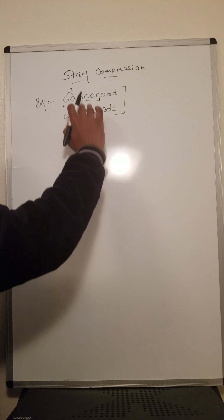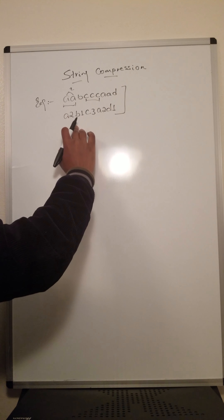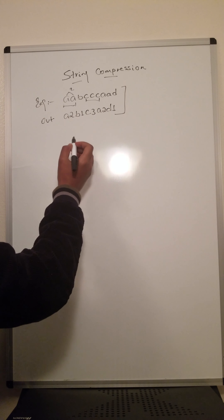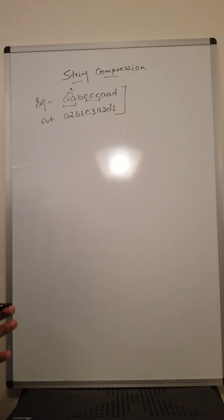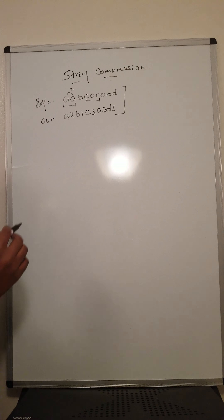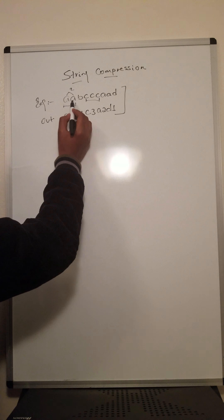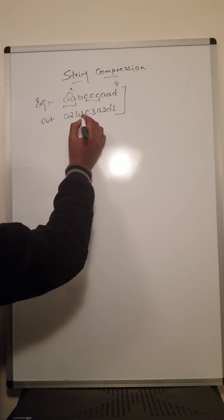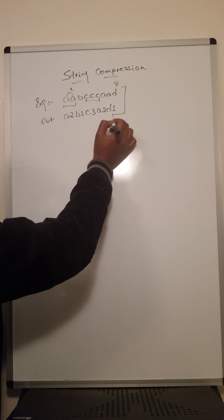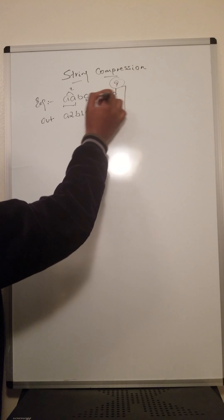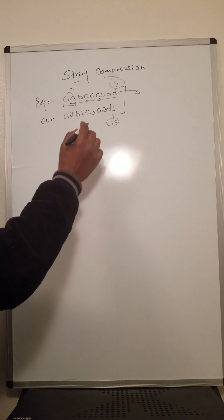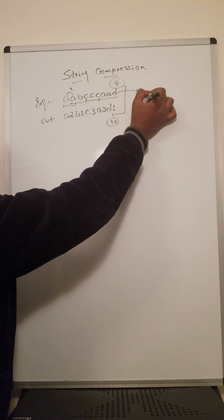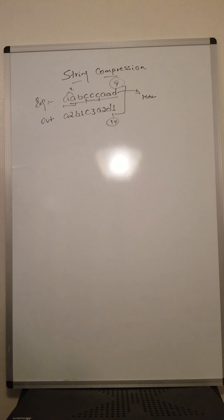At the end we have to compare these two strings to find the smallest one. The original string is ten characters, and the compressed string is nine, so our compressed string is smaller — we return the compressed one.